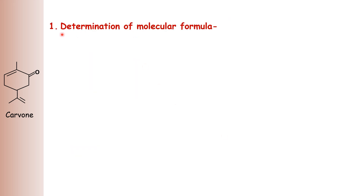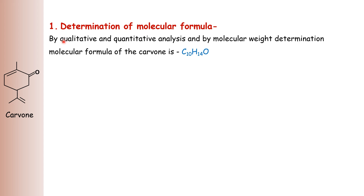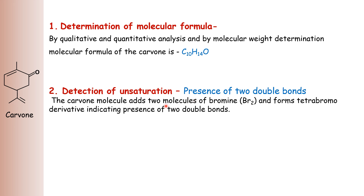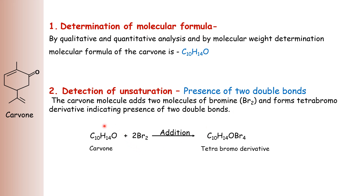The first evidence: determination of molecular formula by qualitative and quantitative analysis and by molecular weight determination gives the molecular formula of carvone as C10H14O. Then, detection of unsaturation — that is, presence of two double bonds. The carvone molecule adds two molecules of bromine and forms a tetrabromo derivative. Formation of the tetrabromo derivative indicates presence of two double bonds, meaning four bromine atoms are added.